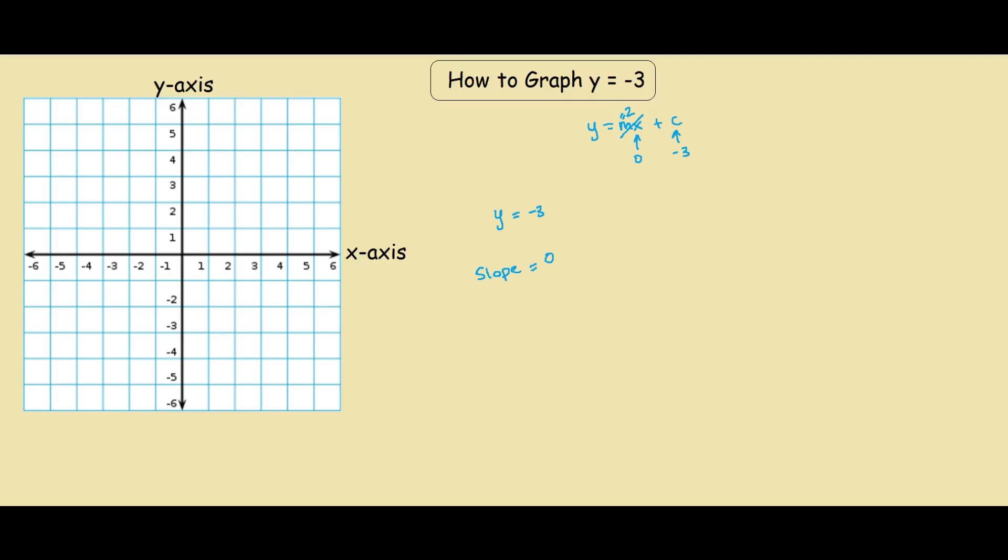So what do we get? We get our y-intercept of negative 3. And since the slope is zero, the answer is simply a straight line. A straight line of negative 3 in both directions.